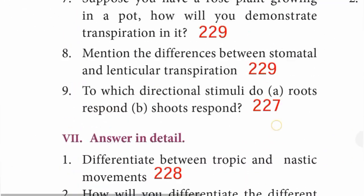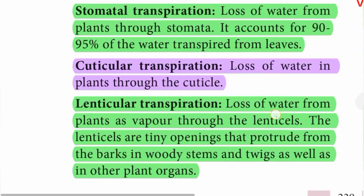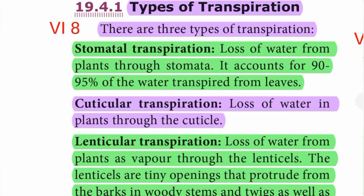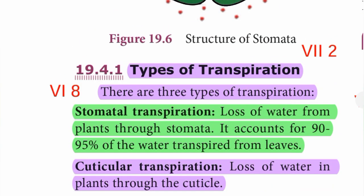Question eight: mention the differences between stomatal and lenticular transpiration. Stomatal transpiration is the loss of water from plants through stomata. It accounts for 90 to 95 percent of the water transpired from leaves. Lenticular transpiration is the loss of water from plants as vapor through the lenticels, which are tiny openings that protrude from the barks in woody stems and twigs as well as in other plant organs.